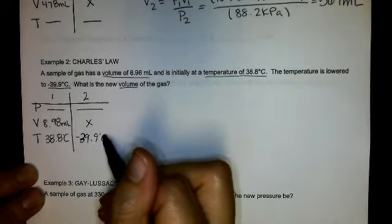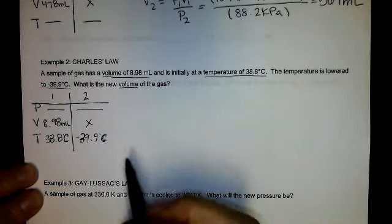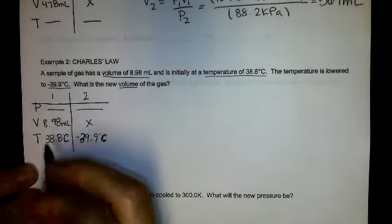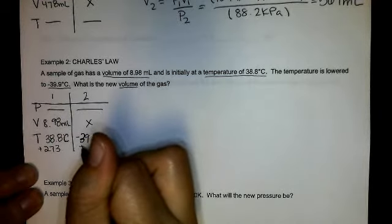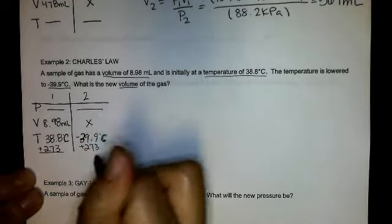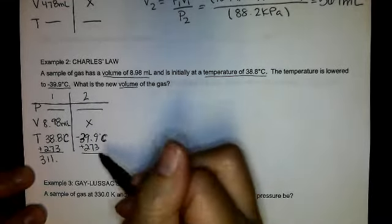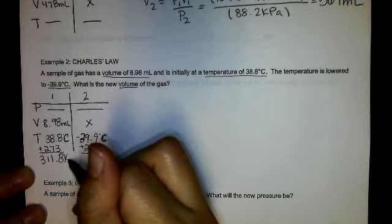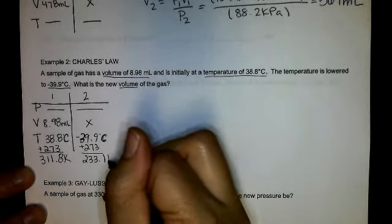Now remember we learned about Kelvin in the last video. All of our gas calculations have to have temperature in Kelvin. So to convert, I have to add 273 to both. So I get Kelvin temperatures of 311.8 Kelvin and 233.1 Kelvin.